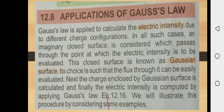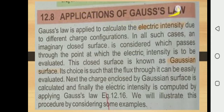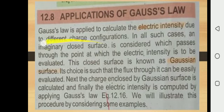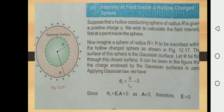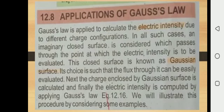First of all, we are taking a view of the applications of Gauss's Law. Gauss's Law is applicable to calculate electric intensity with the help of different charge configurations. In all such cases, an imaginary closed surface is considered which passes through the point at which electric intensity is to be evaluated. This closed surface is known as the Gaussian surface. Any closed imaginary surface through which at any point we are interested to calculate electric intensity is known as the Gaussian surface.